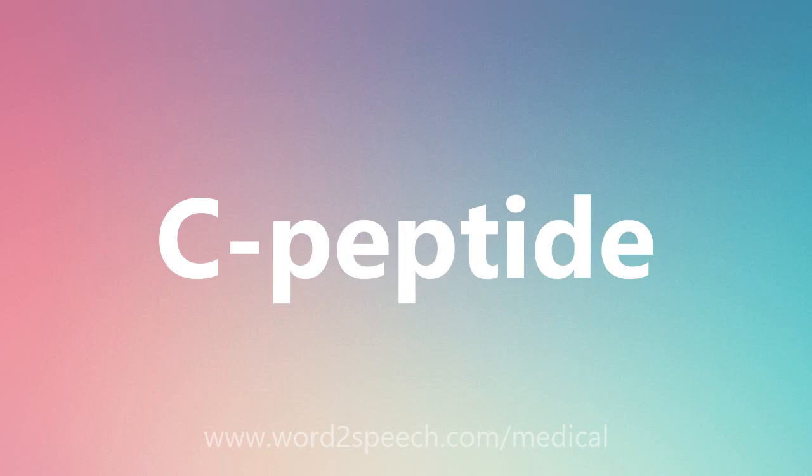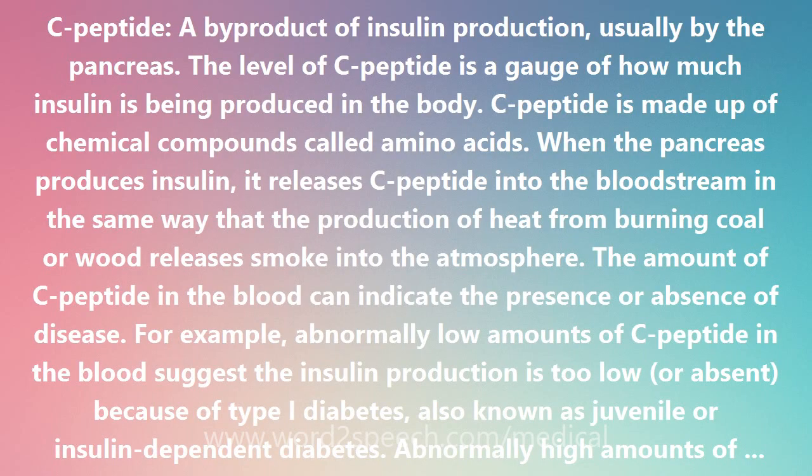C-peptide is a byproduct of insulin production, usually by the pancreas. The level of C-peptide is a gauge of how much insulin is being produced in the body.